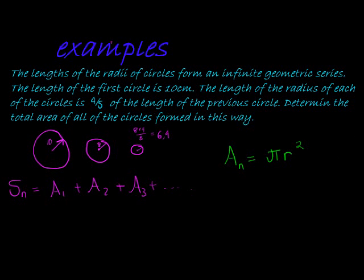So the first one will be pi times 10 squared. The next one will be pi times 8 squared. The next one will be pi times 6.4 squared. And this will go on all the way up to infinity.